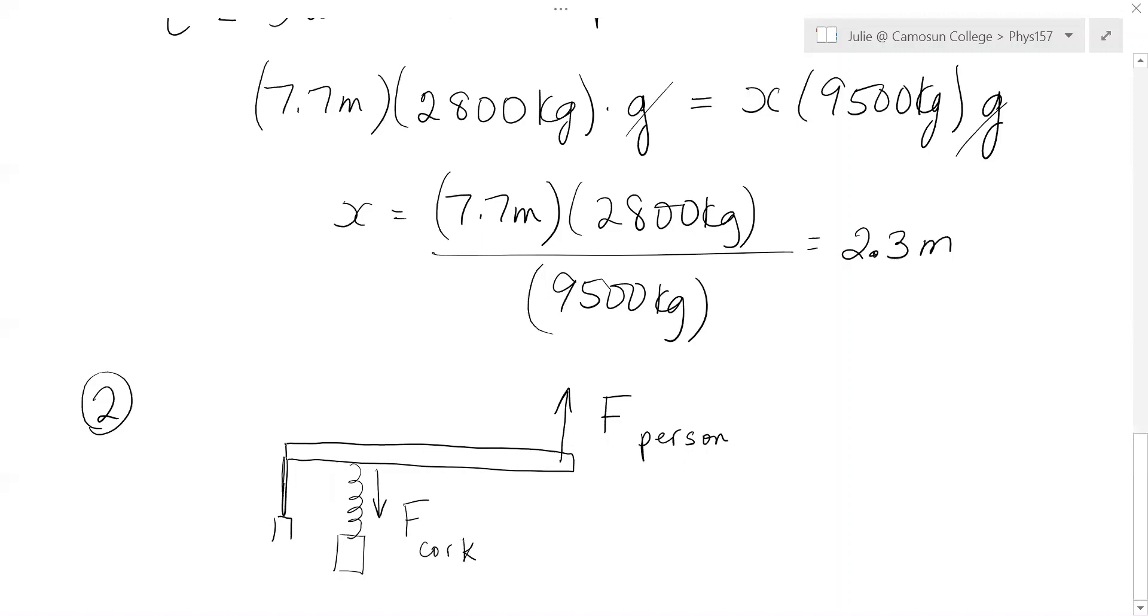So we'll put our pivot here at the end where it's supported on the bottle. So this is like the bottle here. It's just a piece of the bottle. So we'll call this O. So it means the force from the cork, that's clockwise, trying to pull it down. And this force from the person is counterclockwise. So now we just need the distances. Distance out from the support point to the screw is really small.